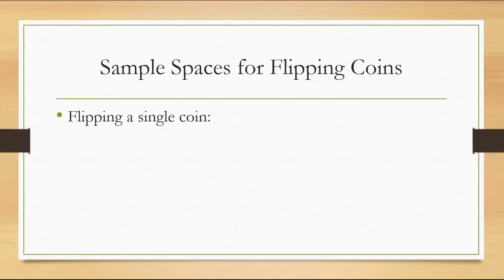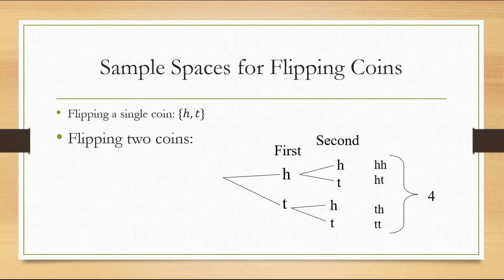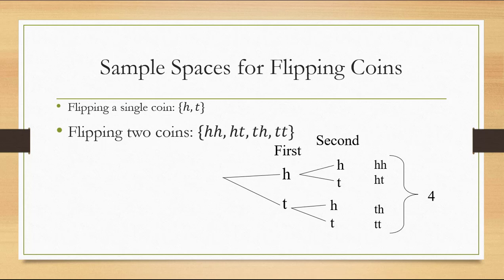So let's start with sample spaces for flipping coins. Suppose we're flipping a single coin — then the possible outcomes are heads or tails, and we're going to assume this is a fair coin where each outcome is equally likely. But what about flipping two coins? For flipping two coins, we have a method of counting and listing the possible outcomes from the counting chapter. For the first coin, we can list heads or tails, and then for each of those results, we can still get either heads or tails on the second coin. This means we can get heads-heads, heads-tails, tails-heads, or tails-tails. So there are four possible outcomes in the sample space.